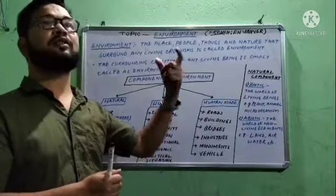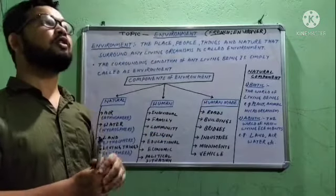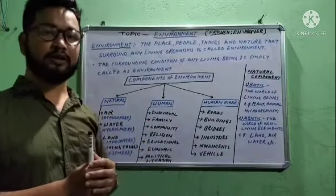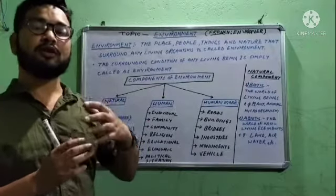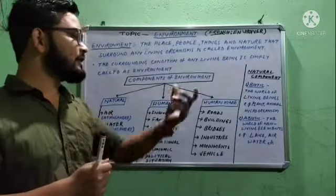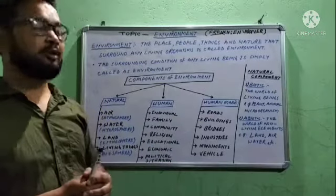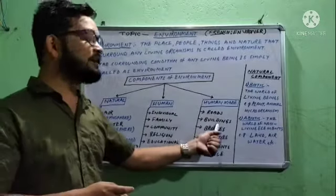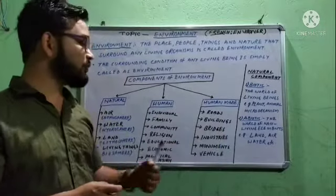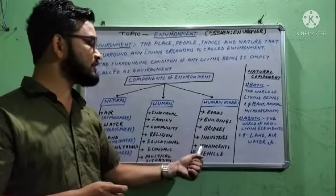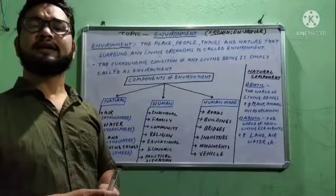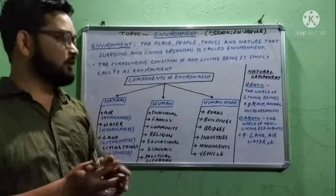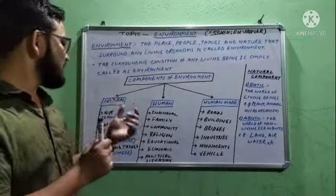Human-made components of the environment include the components created by human beings. Examples of human-made components are: roads, buildings, bridges, industries, monuments, and vehicles. These are all human-made components of the environment.